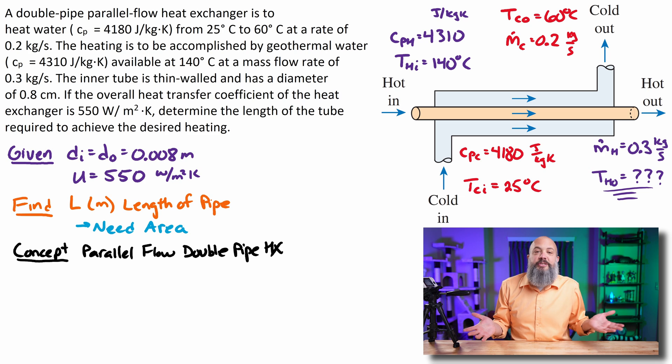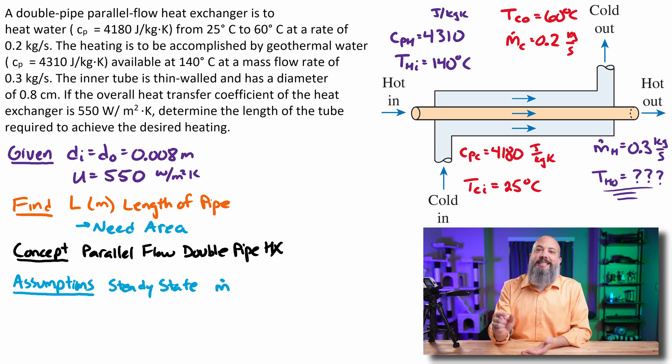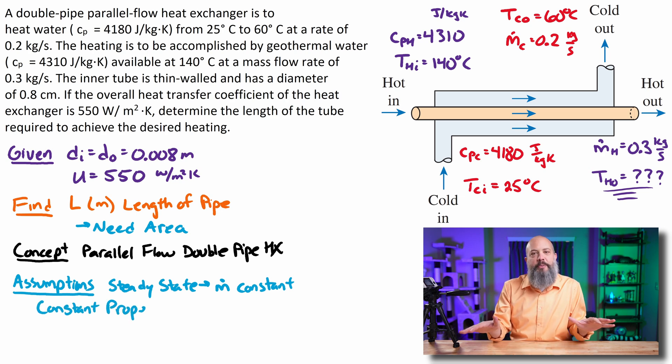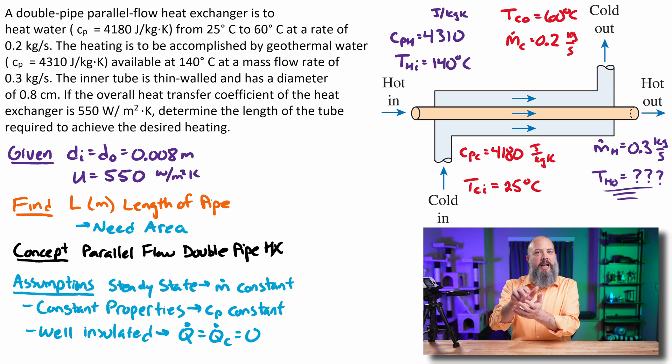The solution method is basically the same, parallel versus counter flow. So the assumptions that I'm going to make that are going to simplify this problem are steady state operations, meaning that mass flow rate is constant. That the fluid properties are constant, like CP is not changing. Technically, CP does change as temperature changes, but I'm just going to assume a constant value for CP to simplify the problem. And I'm also going to assume that the problem is well insulated. Basically, I want to make sure that the amount of heat leaving the hot pipe is exactly the same as the amount of heat gained by the cold pipe. If the cold pipe were also losing heat out to the atmosphere, that would make this problem a lot more complicated.